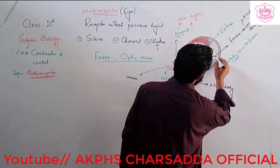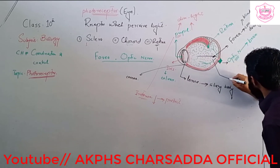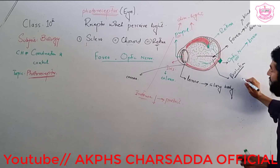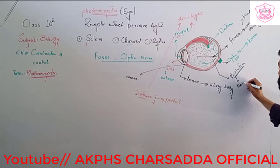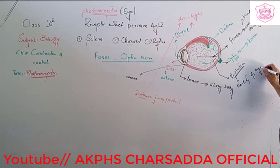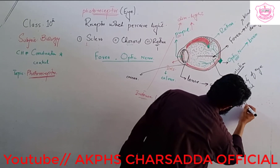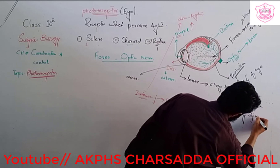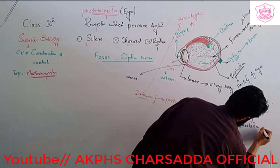The transparent front layer is known as the cornea. The fovea is the point where resolution is the greatest. Resolution is the ability of the eye by which it differentiates between closely placed objects.